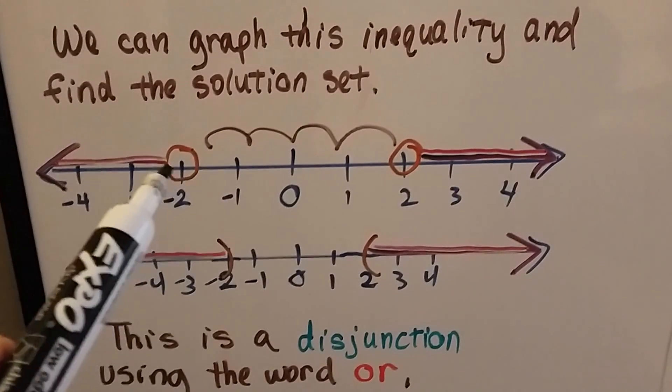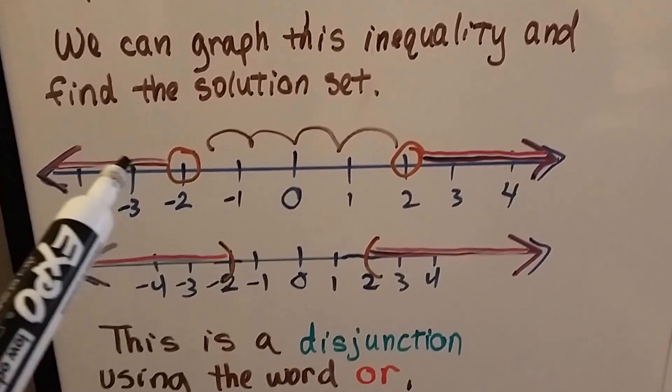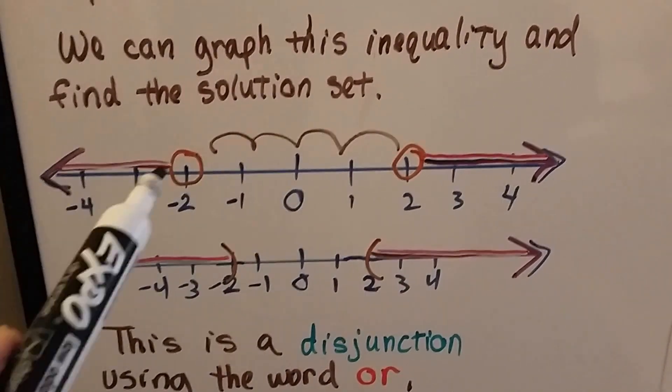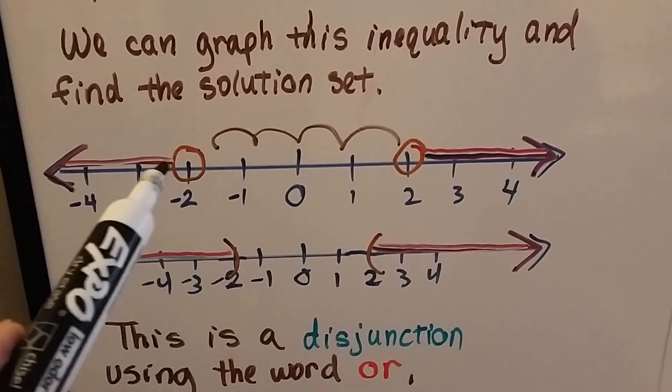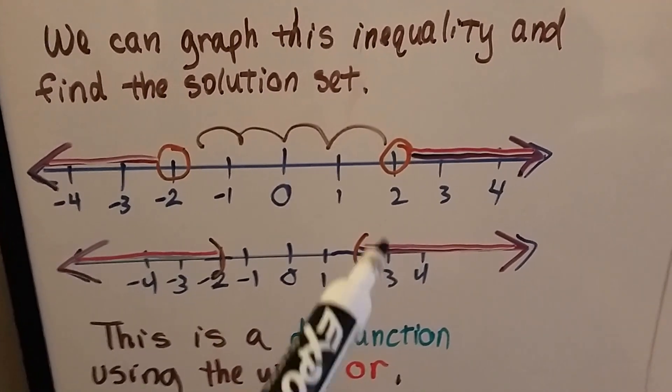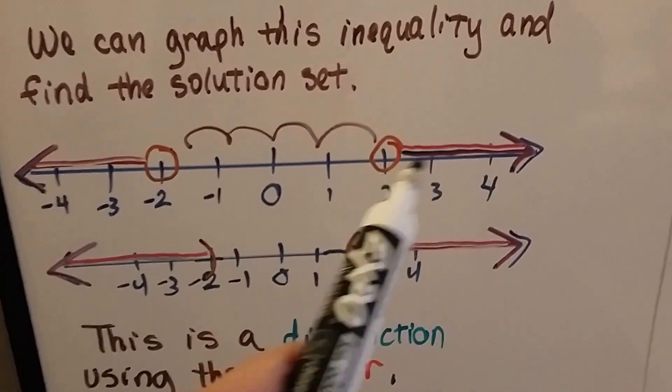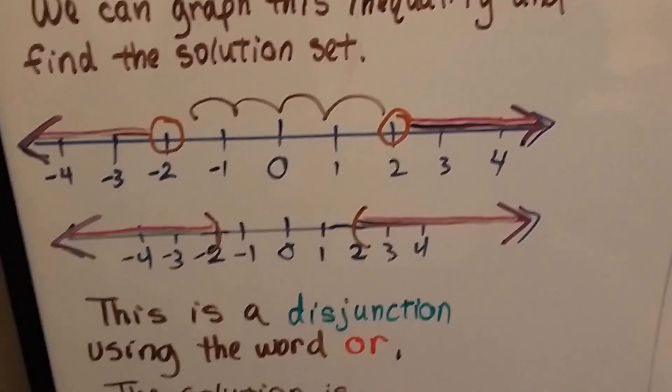So we know that it's going to be less than negative 2 going this way because the smaller numbers we go into, the more negative we go, the smaller the number gets. And it's going to be greater, a larger number on this side.